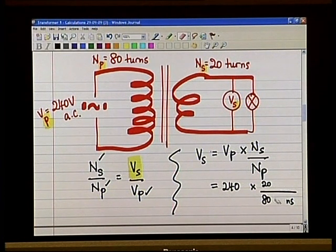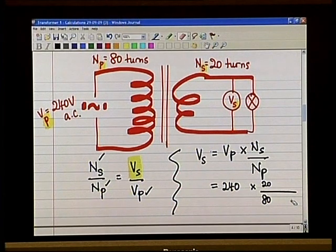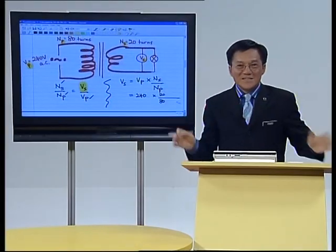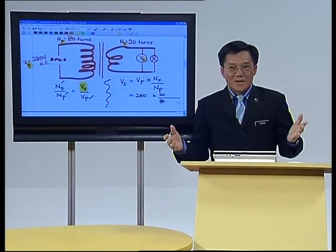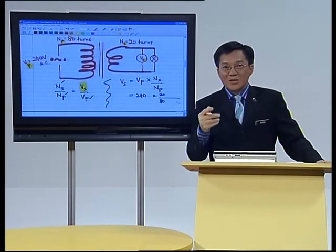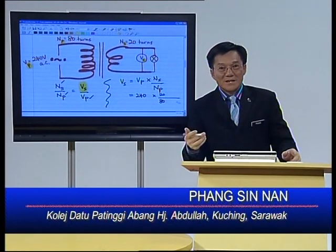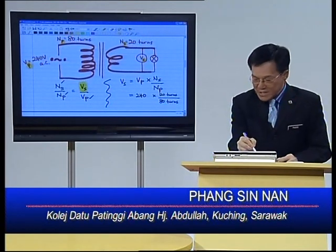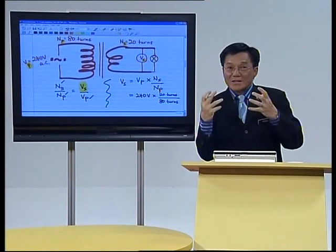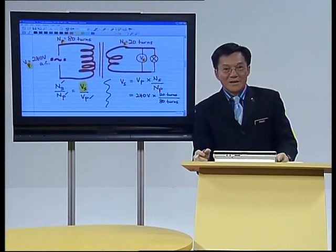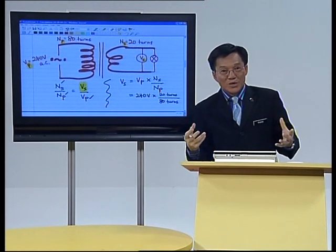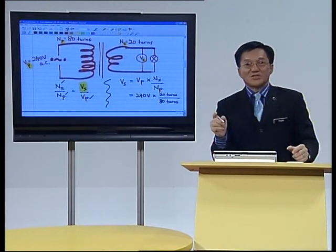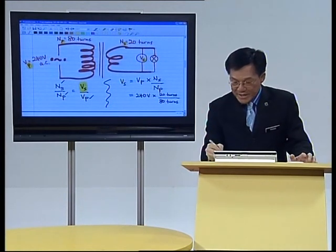If you do not write down the units, you will write: 240 multiplied by 20 divided by 80 — and it doesn't mean anything. This is not physics; this is just numbers and arithmetic. If you do not write down units, you will not be able to understand physics. It is very, very important to always include units. The moment you have units, the concepts become very clear — you know what you are writing and what you are doing.